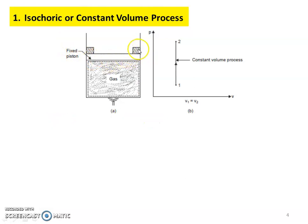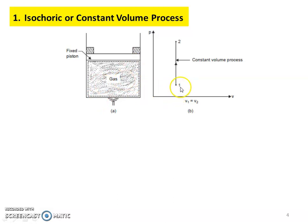The piston is not moving — there are stops, so volume is constant. The gas has initial properties: pressure P1, volume V1, temperature T1, and mass M. Heat is added, so pressure increases while volume remains constant. In the PV diagram, V1 equals V2 and pressure increases from P1 to P2, giving a vertical line for this constant volume process.